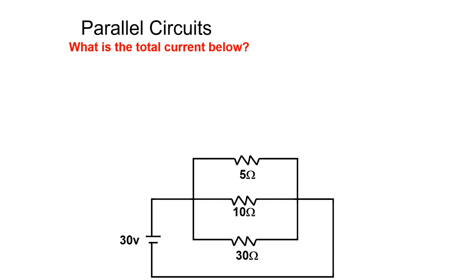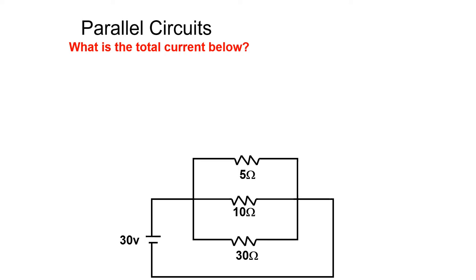Let us solve a simple circuit with three different resistors in parallel, beginning by finding the total resistance. We start by totaling the inverse of each individual resistor: 1 over 5 ohms for the top resistor, 1 over 10 ohms for the middle resistor, and 1 over 30 ohms for the bottom resistor. Once we add these three values together we get 0.333.